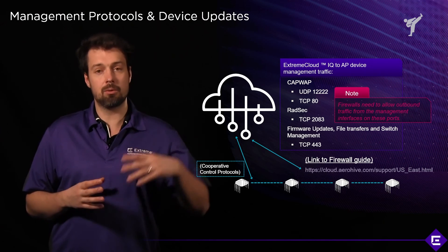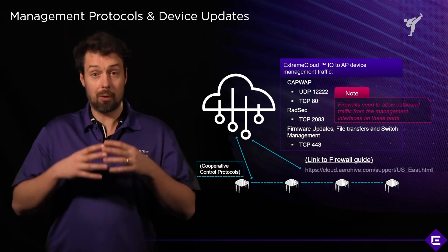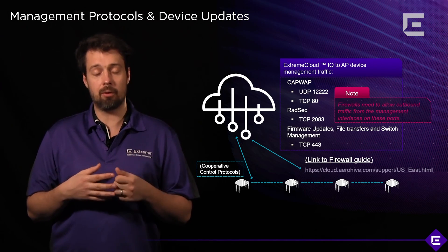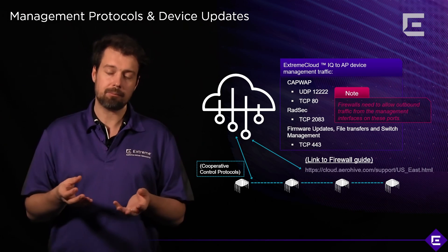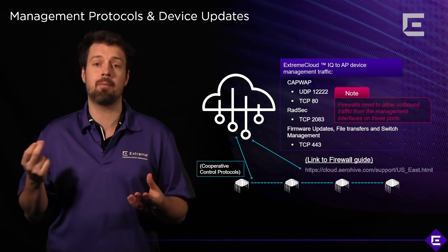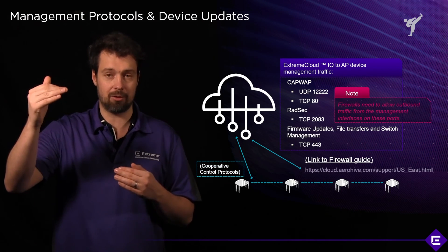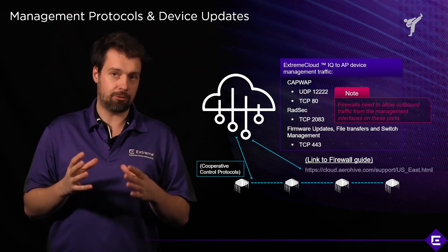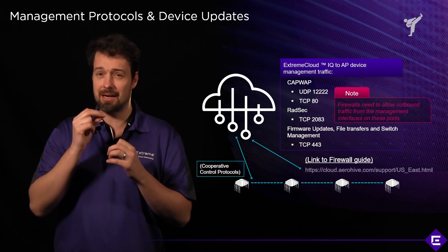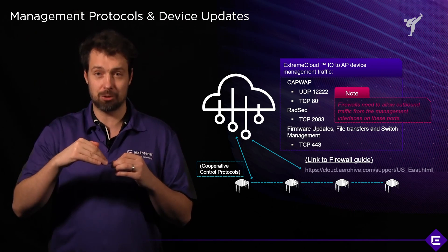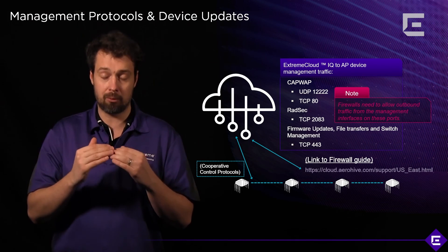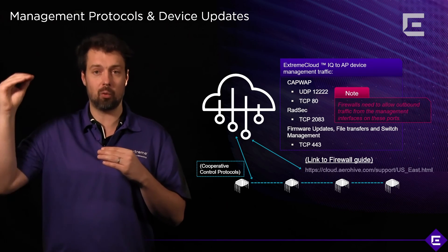For access point to Extreme Cloud IQ communication — management traffic — the first thing that needs to be open is UDP port 12222, which is the CapWeb protocol. We implement a fallback mechanism to TCP port 80, because this is probably the most common port open on all firewalls in the outward direction. However, note that some newer next-generation firewalls will detect that the payload of that traffic is actually CapWeb, not HTTP, and will often drop the traffic. As best practice, we always encourage using the CapWeb protocol and opening UDP port 12222 in the outbound direction from the management VLAN of the access points towards Extreme Cloud IQ.